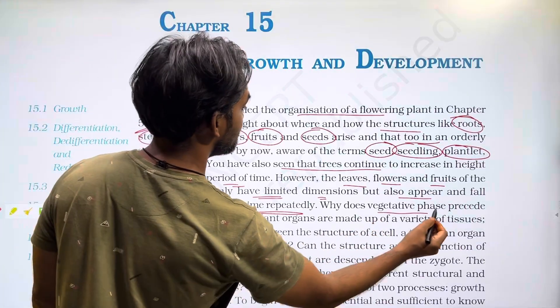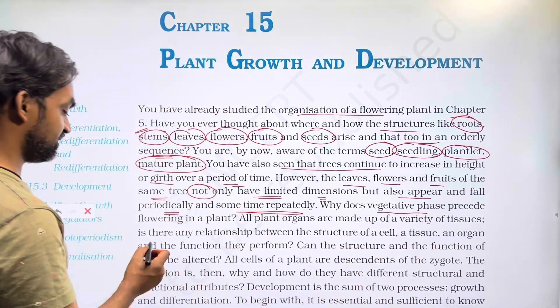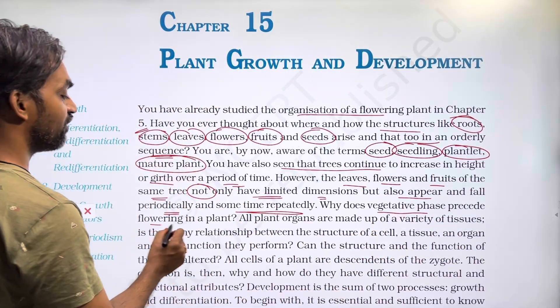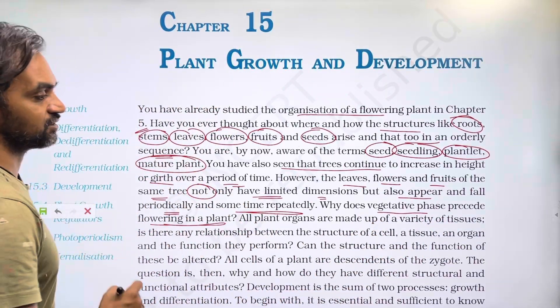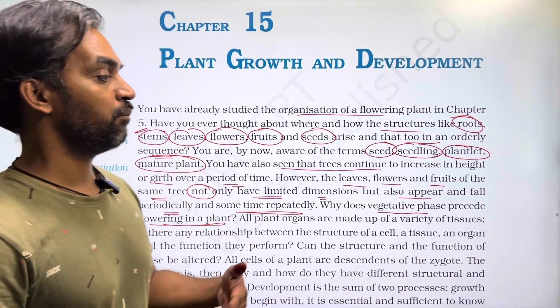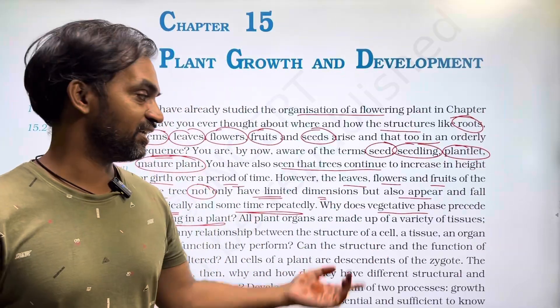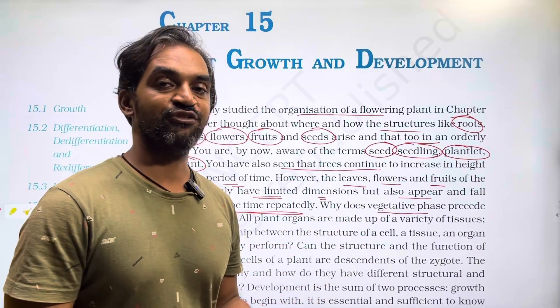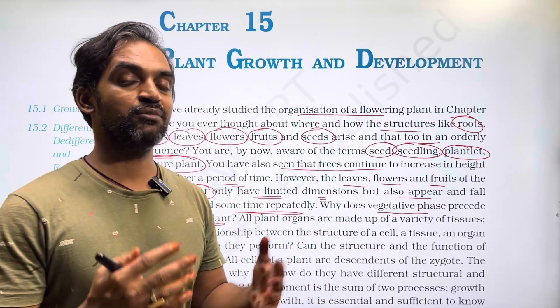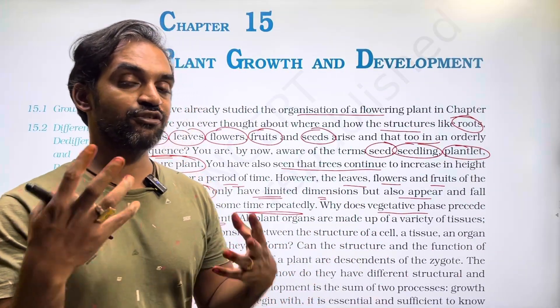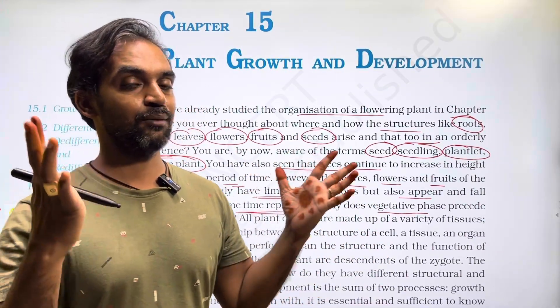Why does the vegetative phase precede flowering in plants? The vegetative phase — that is root, stem, leaf — forms first, and then the plant matures into the reproductive phase with flower, fruit, and seeds.